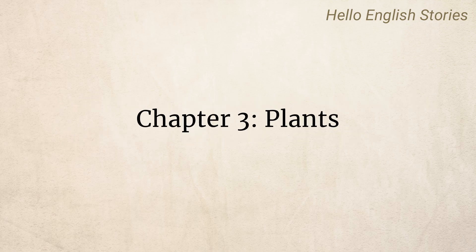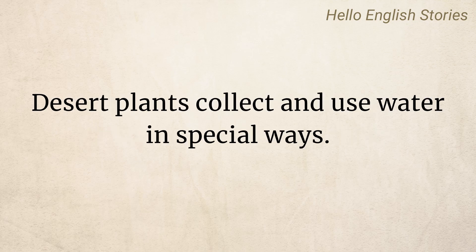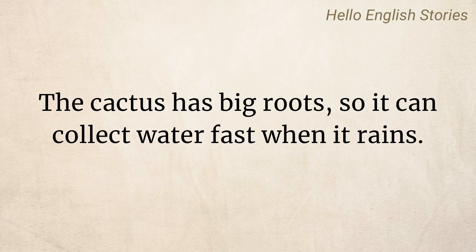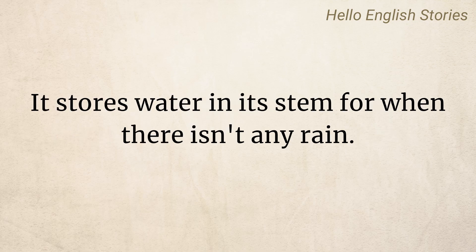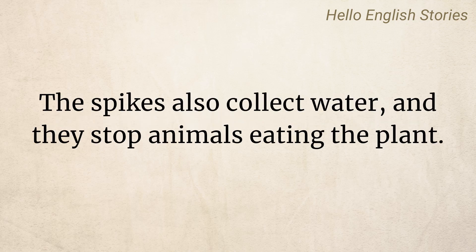Chapter 3: Plants. Deserts are very dry places, but plants can still grow there. Desert plants collect and use water in special ways. The cactus has big roots, so it can collect water fast when it rains. It stores water in its stem for when there isn't any rain. Many cactus plants have spikes. The spikes also collect water, and they stop animals eating the plant.